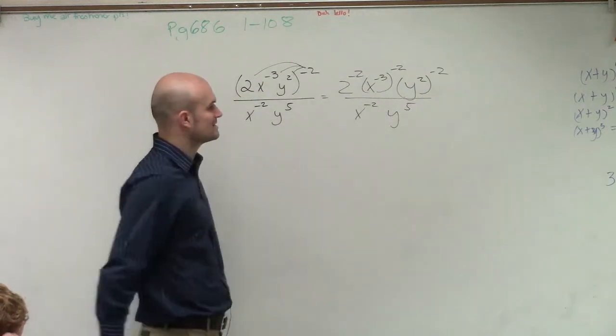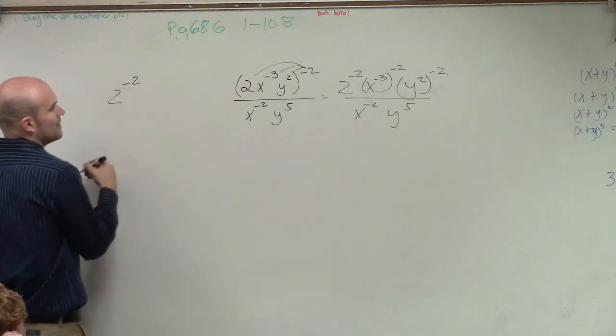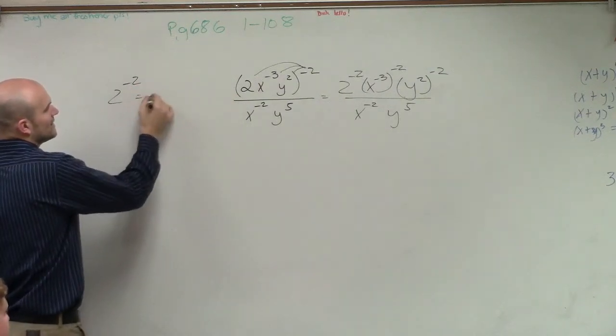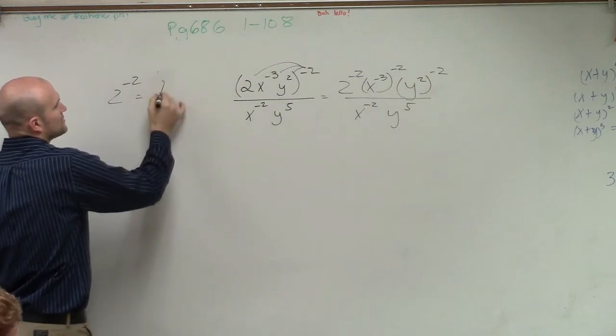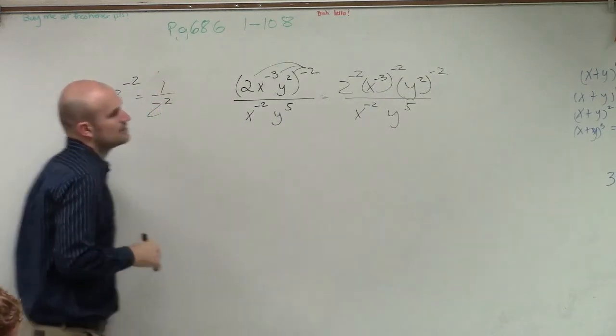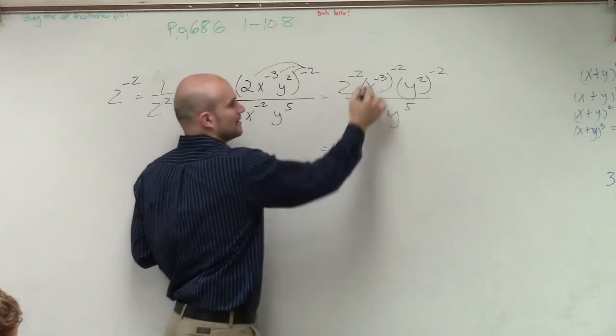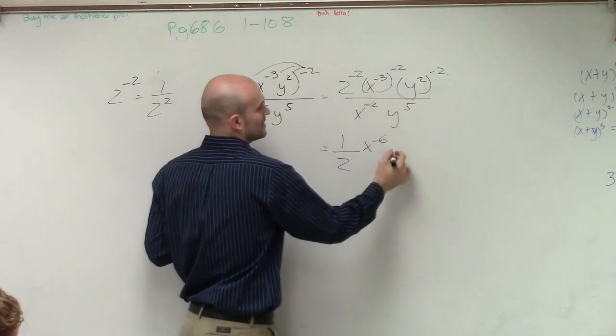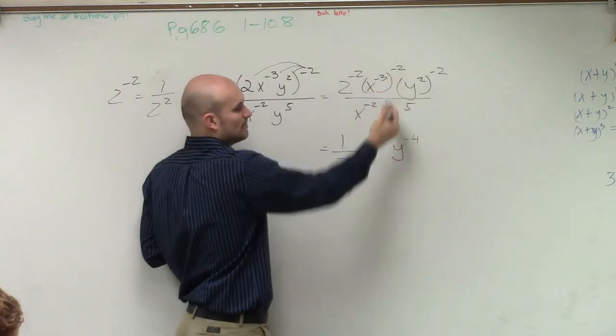Then let's try to simplify this as much as we can. Remember, anything raised to a negative exponent, we can rewrite that as 1 over 2 squared. So therefore, 2 to the negative square, that's going to be 1 over 2. This becomes x to the negative 6. This becomes y to the negative fourth. Because remember, power to power rule, you multiply them.